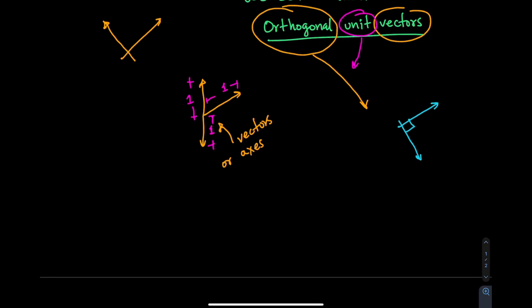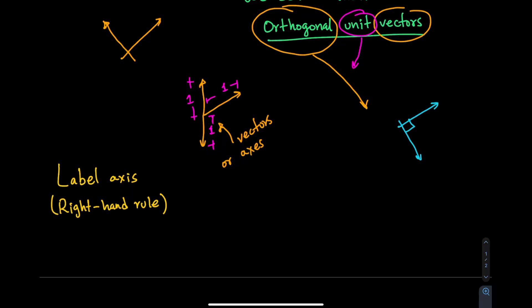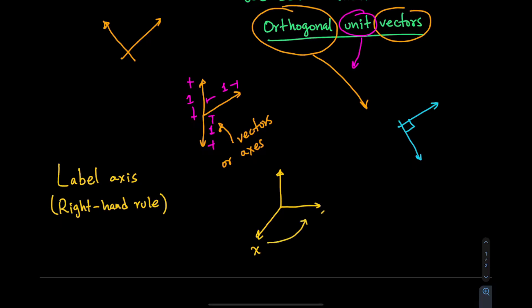Now let's talk about labeling the axes. To label our axes we need to follow the right-hand rule — specifically, we go in a counterclockwise direction when naming them. For example, if we have three axes, we name the first one X, then go counterclockwise to name Y, and then go counterclockwise again to define Z.